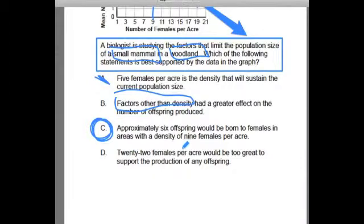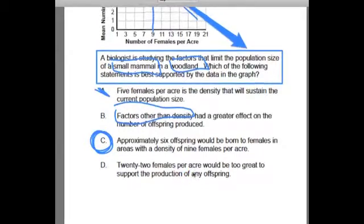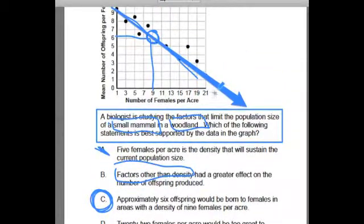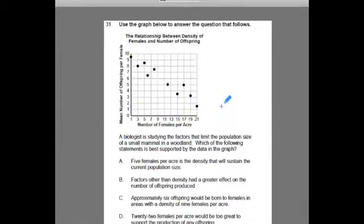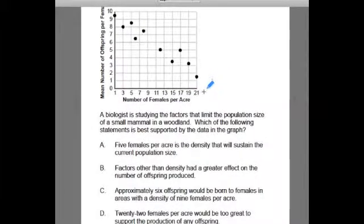And then D. Twenty-two females per acre would be too great to support the production of any offspring. Well, if there was one more, let me clear this up a little bit. If there was one more little squirrel there, there would be zero. The problem with D is that that information is not on our graph. And we're looking for something that's best supported by the data in the graph. It has to be in the graph. That's the key. And this one right here, even with the line of best fit, it looks like at 22, it's going to be closer to maybe one offspring per acre.